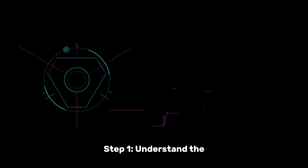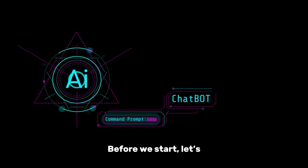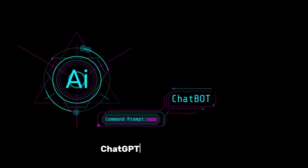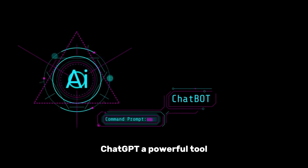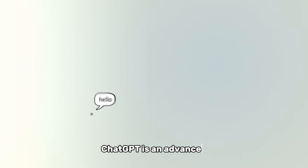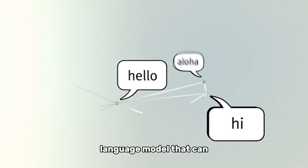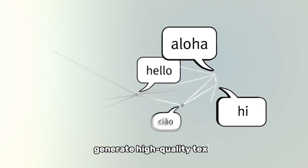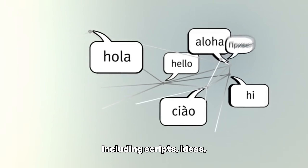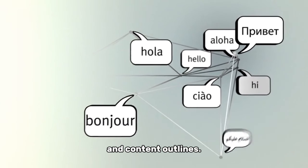Step 1: Understand the potential of ChatGPT. Before we start, let's talk about what makes ChatGPT a powerful tool for creating AI videos. ChatGPT is an advanced language model that can generate high-quality text, including scripts, ideas, and content outlines.